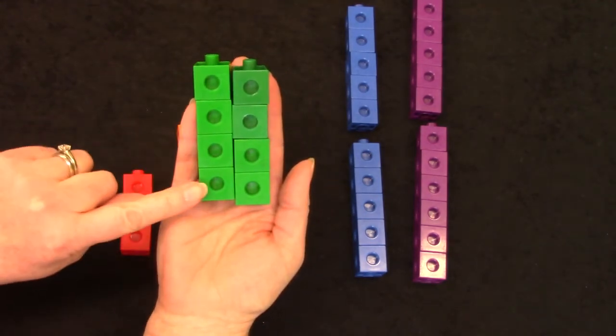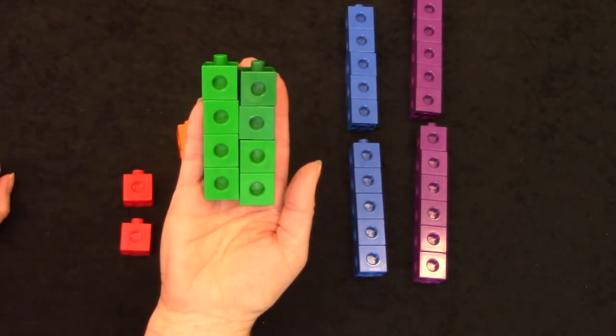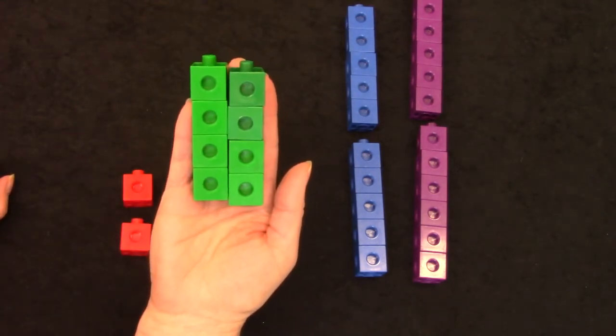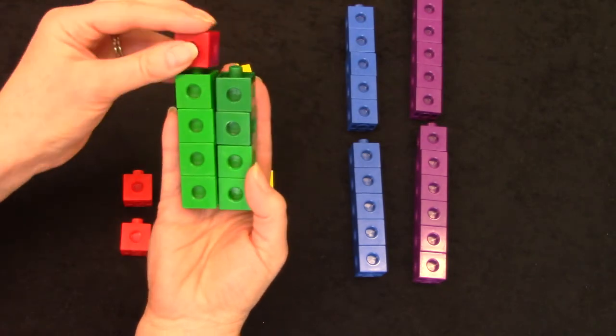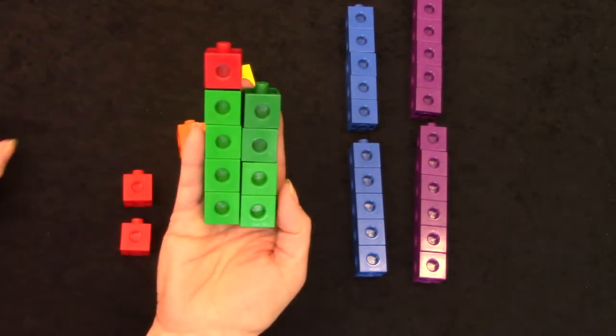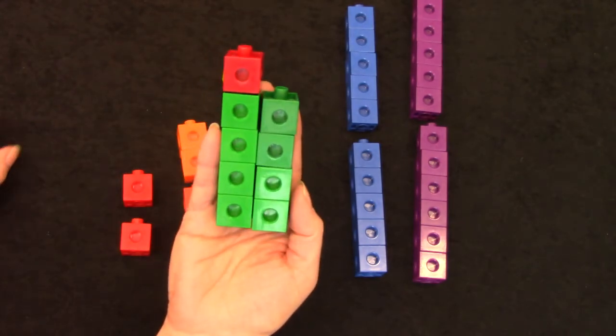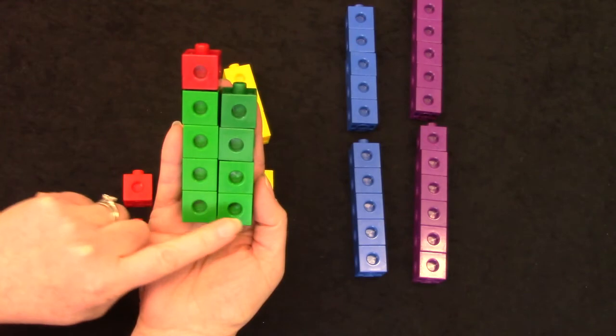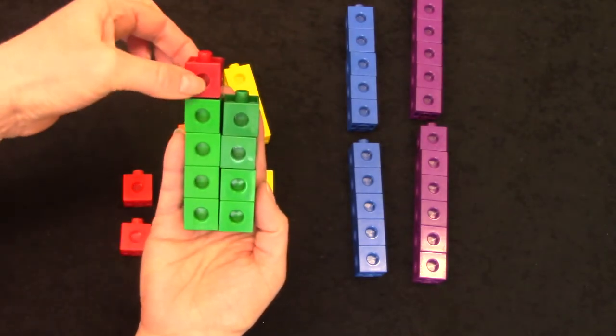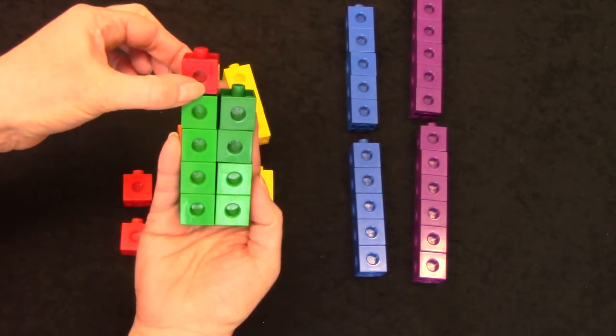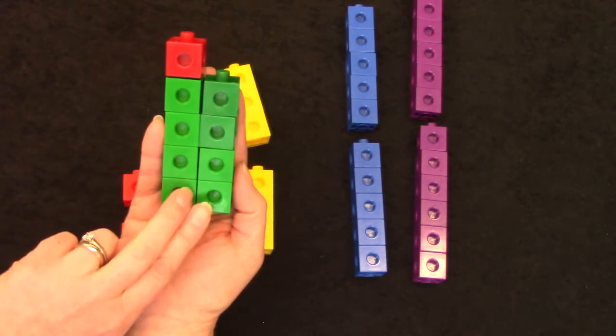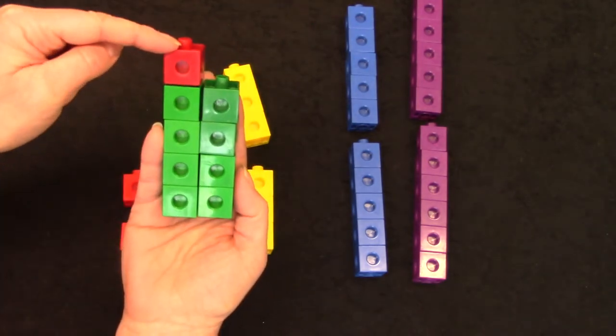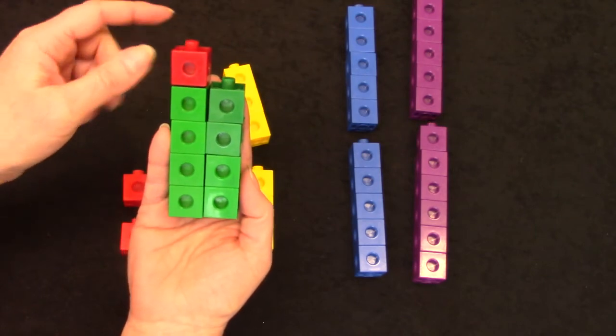What if we're adding four plus four? Well, you know that double fact. Four plus four is eight. But what if we added one more to one of the towers so that it is five plus four? Five plus four is one more than four plus four. Let's count it out by twos. Two, four, six, eight, and one more, nine. Five plus four is nine.